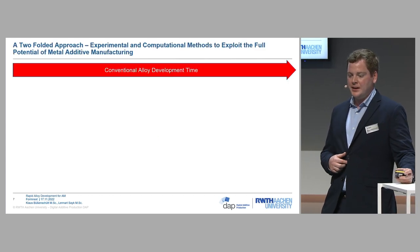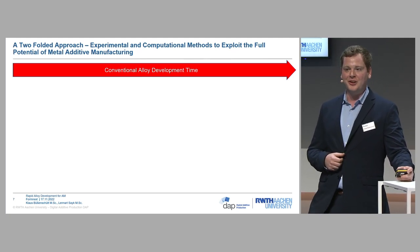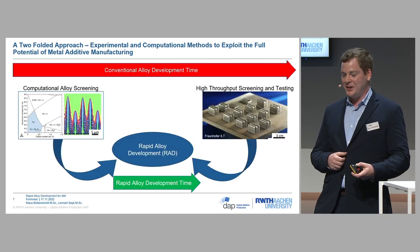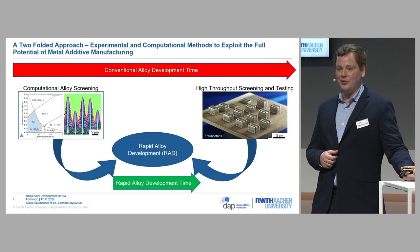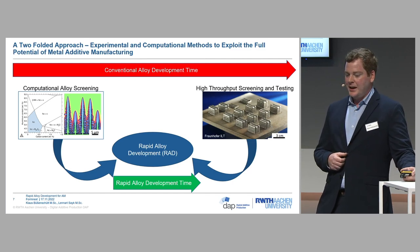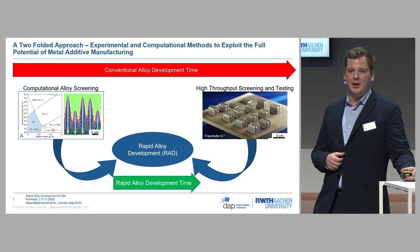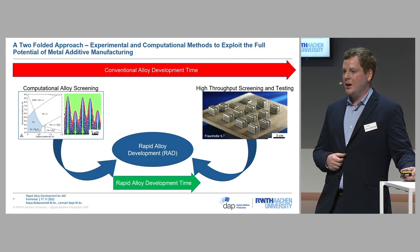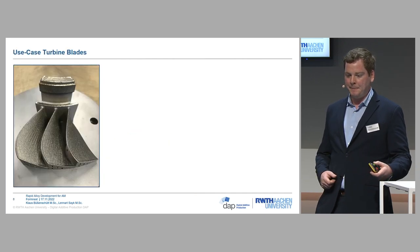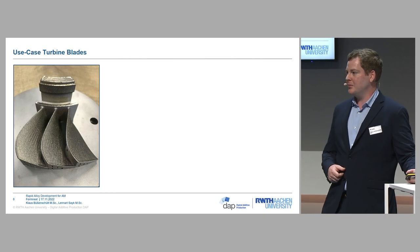The big red arrow represents the time for conventional alloy development. What we are doing is a rapid alloy development approach: we start with computational alloy screening, then do high-throughput screening and testing, and come out with just a small number of processable alloys in the end. Let's take a look at our use case to make this a bit more concrete — we have a turbine blade on the monitor.